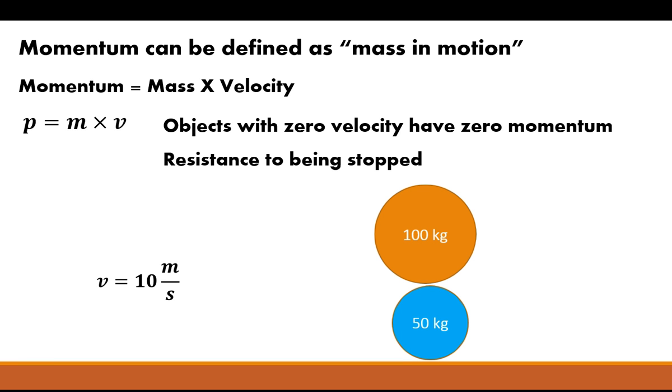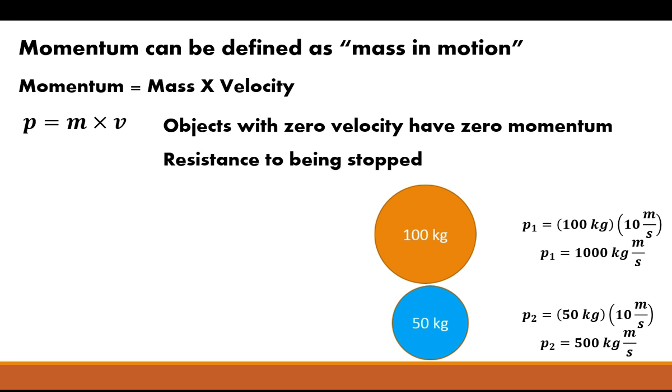Well, if we look at the first sphere, you can calculate its momentum. Mass times velocity is just going to equal 100 kilograms times 10 meters per second, so 1,000 kilograms meters per second. The other one, going at the exact same speed at half of its mass, is 500 kilograms meters per second. So you can see the momentum is proportional to its mass.